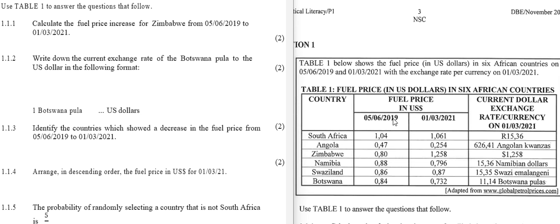Basically this table gives us the prices for two different years, 2019 and 2021, and the last column gives us the exchange rates in terms of one US dollar. We must answer questions using all this information.